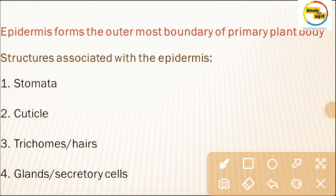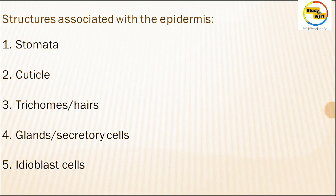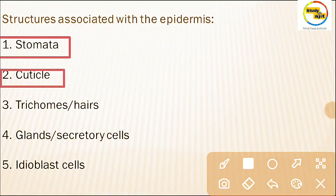The epidermis forms the outermost boundary of the primary plant. If we look at the components, we have: number one, Stomata; number two, Cuticle; number three, Trichomes and Hair; number four, Glands and Secretory Cells; and number five, Idioblast Cells.